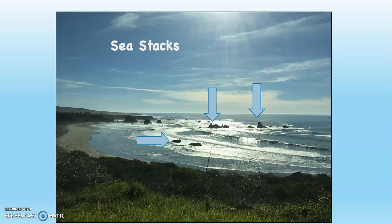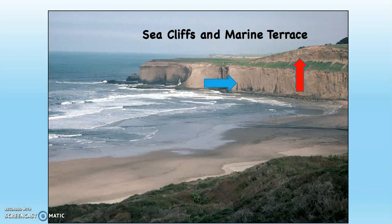Meanwhile, the coastline is simultaneously being uplifted. You can see the sea cliffs here with the blue arrow, and even a marine terrace over there on the right-hand side where the red arrow is — which means that area where the red arrow is used to be at sea level. Now it's not, because that landscape was uplifted away from the water.